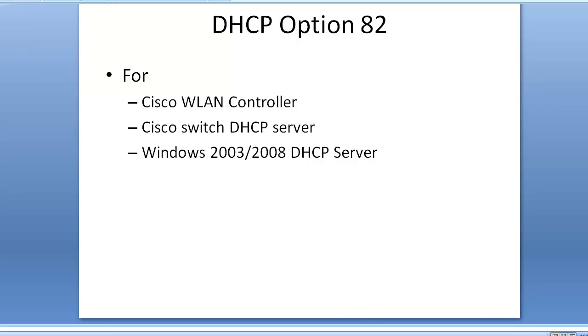Hi, I am Jerome from Fastlane. Welcome to the series on CCIE Wireless v2. Today I would like to show you how to configure DHCP option 82 on the controllers, on the Cisco switch DHCP service, and on the Windows DHCP server.